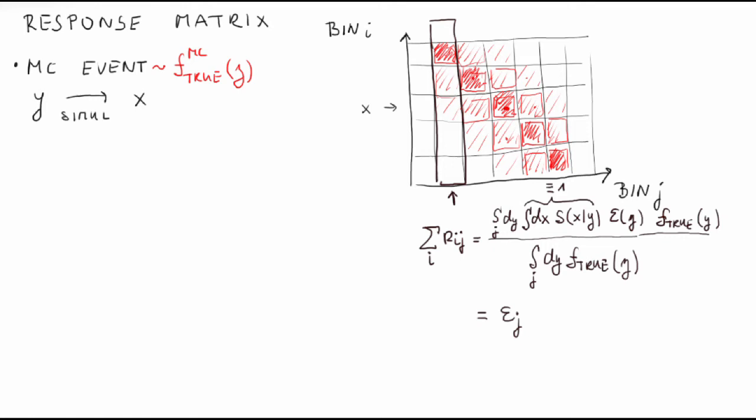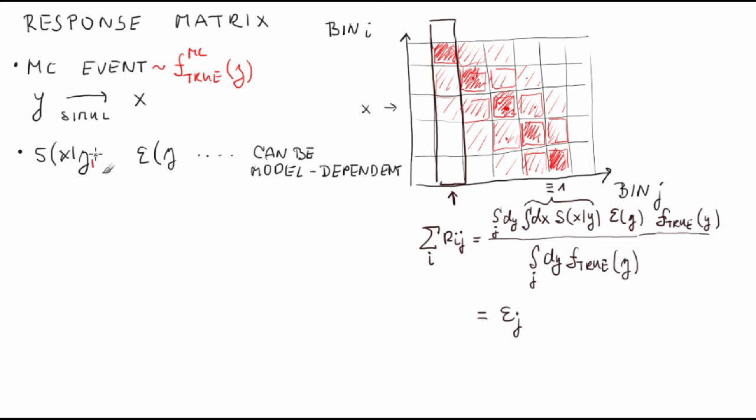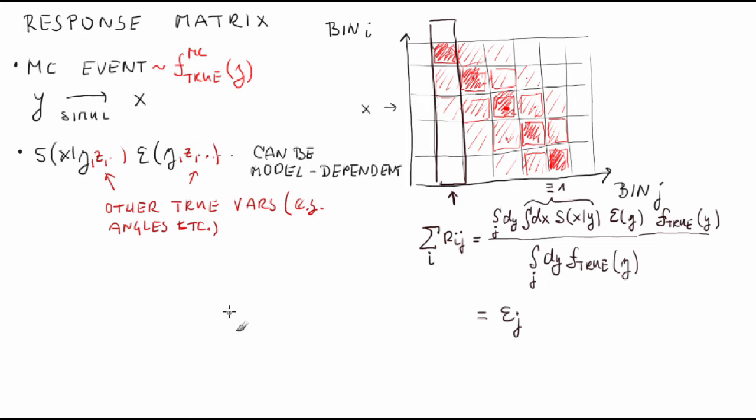Note that the sum ∑_j R_{ij} has no remarkable meaning. Note that the smearing and efficiency functions are, of course, independent of the true pdf for y. However, they might not be model independent, because y might not be the only variable that influences the probability to obtain a measured value x. Typically, angular variables influence the measured energy x, because different parts of the detector have different resolution and efficiency.